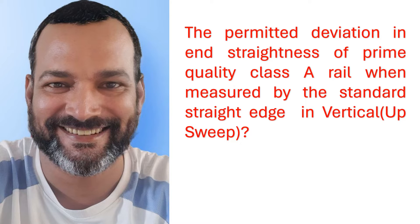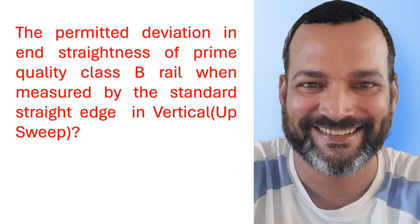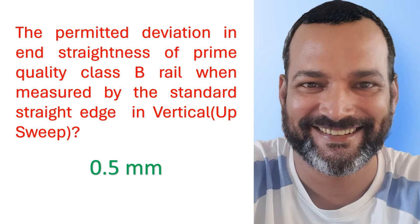The permitted deviation in end straightness of prime quality Class A rail when measured by the standard straight edge in vertical upswipe is 0.4 millimeter. The permitted deviation in end straightness of prime quality Class B rail when measured by the standard straight edge in vertical upswipe is 0.5 millimeter.